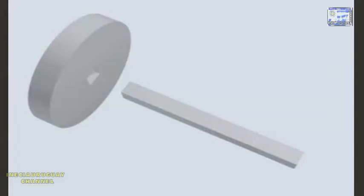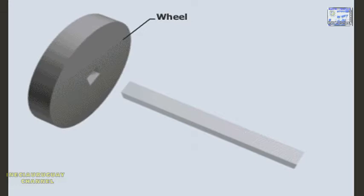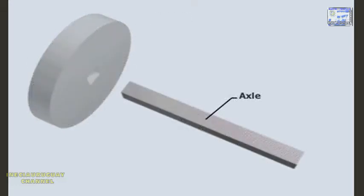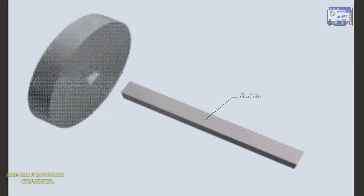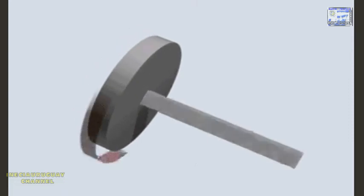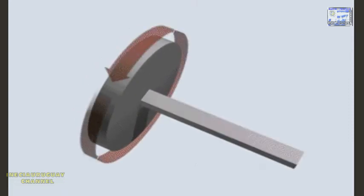A wheel and axle is a simple machine that makes moving an object or load easier. It consists of a larger wheel attached to a smaller axle. It acts as a machine only if the wheel and the axle are fixed together and rotate as a single unit.